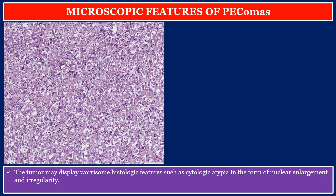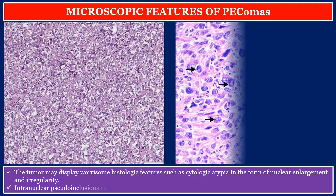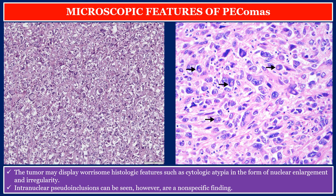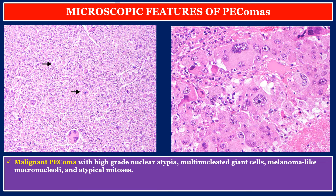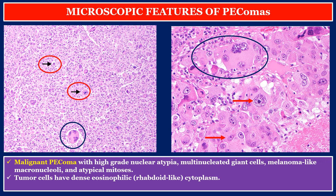The tumor may display worrisome histologic features such as cytologic atypia in the form of nuclear enlargement and irregularity. Intranuclear pseudoinclusions can be seen; however, they are a non-specific finding. These two photos show a malignant PEComa with high-grade nuclear atypia, multinucleated giant cells, melanoma-like macronucleoli, atypical mitosis, and tumor cells with dense eosinophilic rhabdoid-like cytoplasm. Necrosis occurs in approximately 50% of cases.